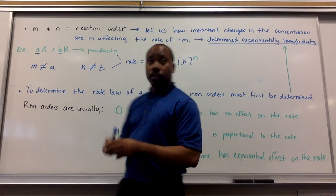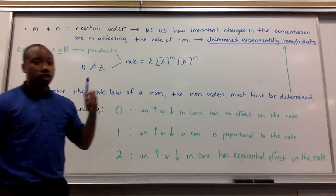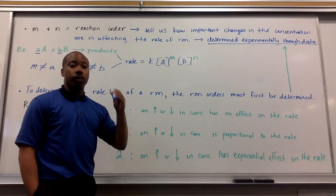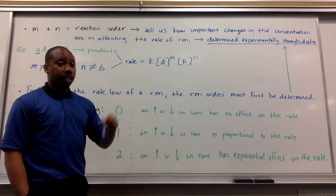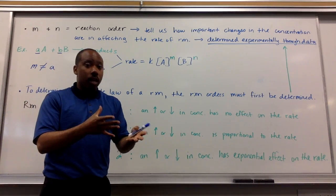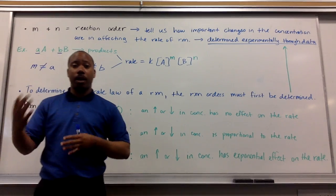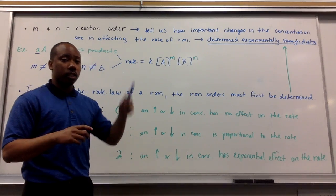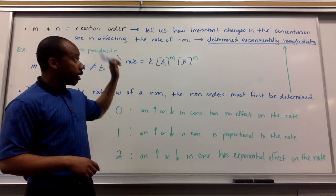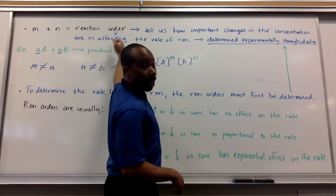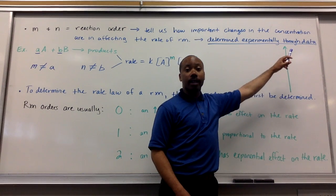Reaction orders tell us how important changes in the concentration are in affecting the rate of the reaction. If I change the concentration by this much, how will it affect my rate? Versus if I change it by that much, how will it affect my rate? We'll look at this more closely in a moment. We determine our orders of reaction or reaction orders experimentally through data. You have to have data in order to figure out what your reaction orders are.